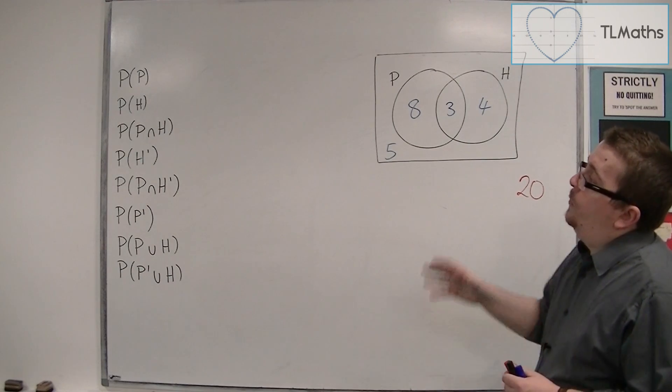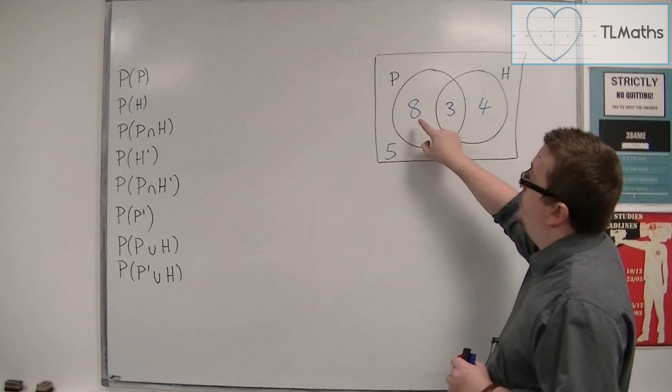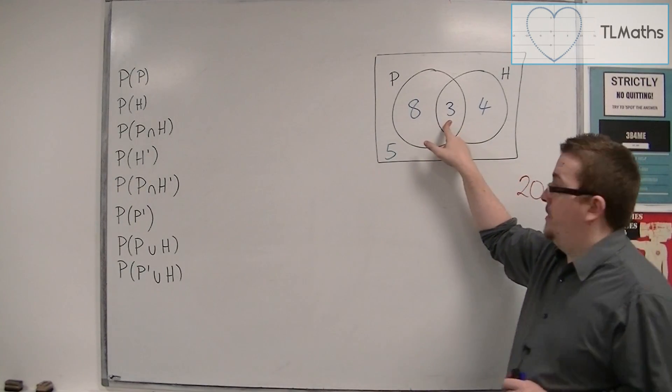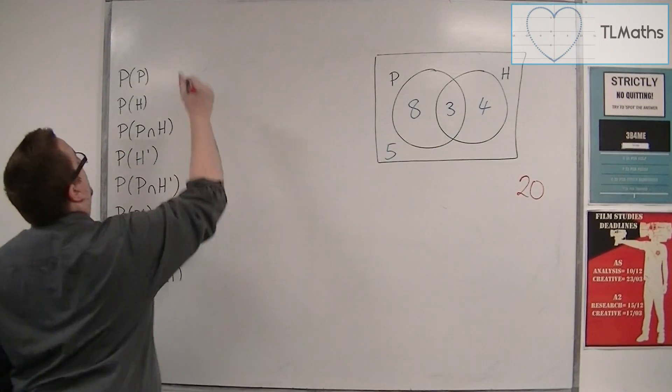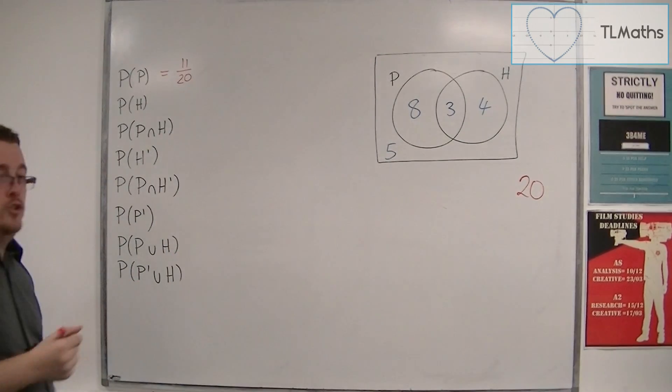And now I want to think about how many of them study physics. Well, we have eight that study just physics and three that study both physics and history. So in total, I've got 11 who study physics. So that's 11 out of 20. And I'm going to leave it as a fraction.